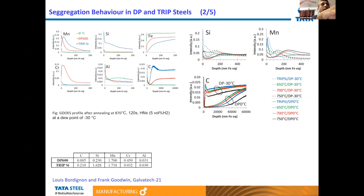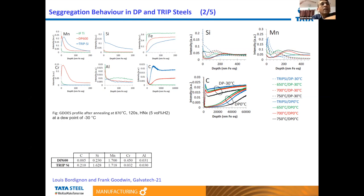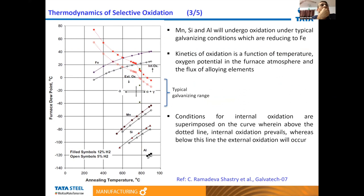Looking at the right-hand side profile showing silicon, manganese, and carbon: the dashed lines represent material annealed at lower dew points of minus 30°C, resulting in surface oxide formation of silicon and manganese. The solid lines represent material annealed at higher dew points of around 0°C, where the oxides are barely present at the surface but are present in the subsurface region.